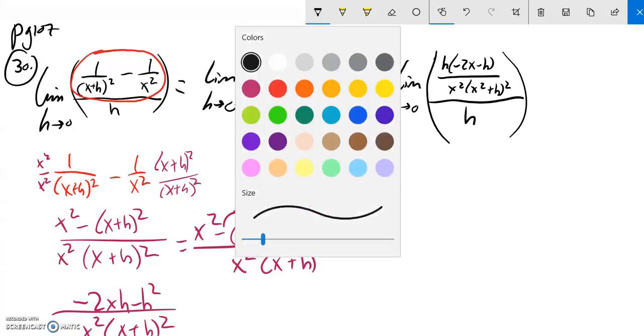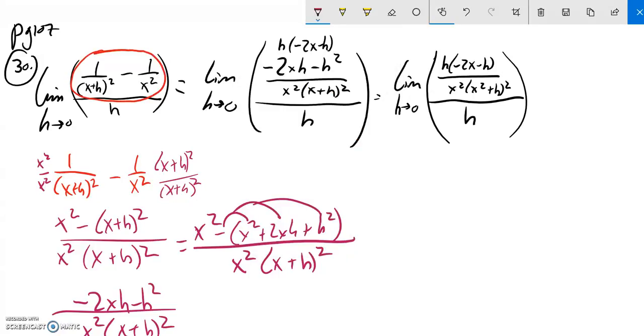So notice that now here I basically have this fraction divided by h. In other words, I'm just going to rewrite it and ignore the limit for a second, just to do some simplifying.